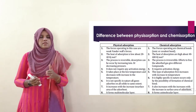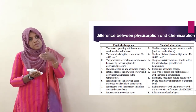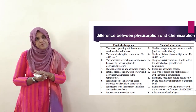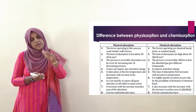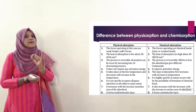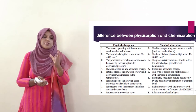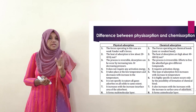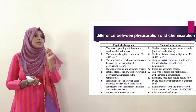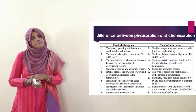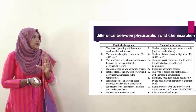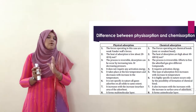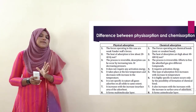In physisorption, multi-molecular layers are formed on the adsorbent surface. In chemisorption, only a mono-molecular layer is formed. This is a major difference between physical adsorption and chemical adsorption.